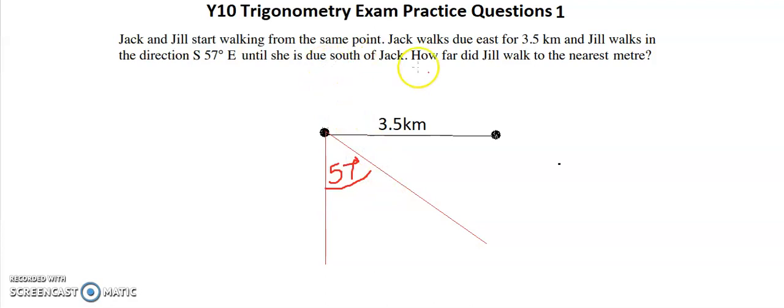She walks until she is due south, so directly south of Jack, which is right here. We need to find out how far Jill walked to the nearest meter.